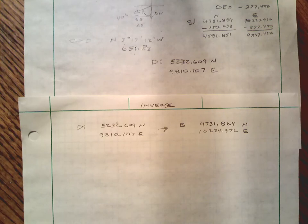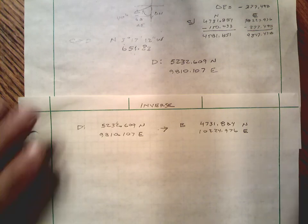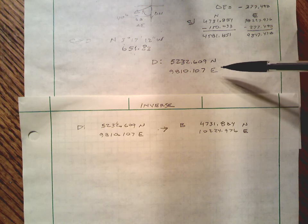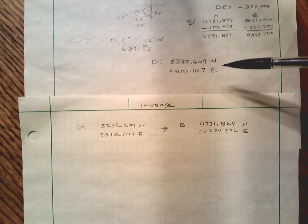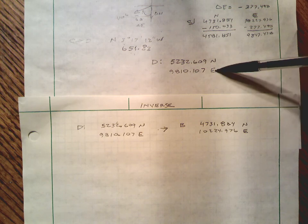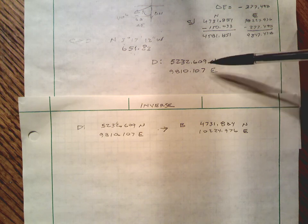Okay, so from the previous lesson we went through the coordinates, the method of finding the coordinates of individual points. We call that the forward direction. Given the bearing and the distance and a starting coordinate, we can find the coordinates of other points in the traverse or of other points on the property boundary. The last thing we ended up with was finding the coordinate of point D: 5232.609 N, 9910.107 E.